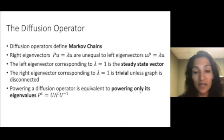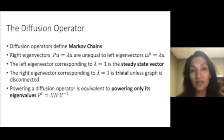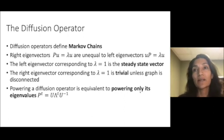And in fact, in a Markov chain, all the eigenvectors have magnitude 1 or less. The right eigenvector corresponding to the same eigenvalue is trivial unless the graph is disconnected.